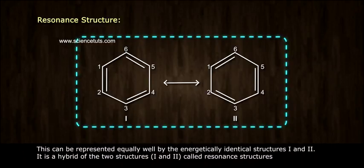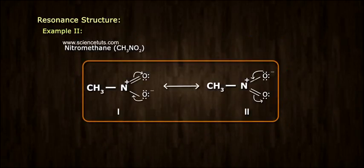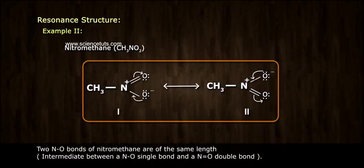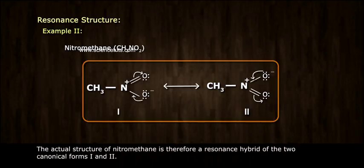Example 2: Nitromethane CH3NO2. Two N-O bonds of nitromethane are of the same length, intermediate between a N-O single bond and a N-O double bond. The actual structure of nitromethane is therefore a resonance hybrid of the two canonical forms 1 and 2.